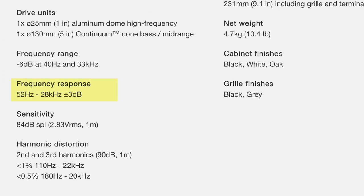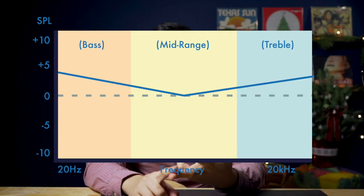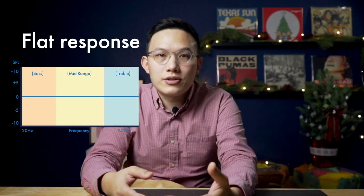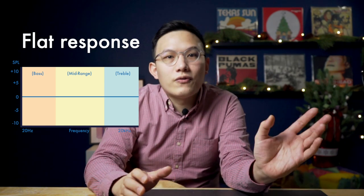Frequency response means how well a speaker can reproduce sound across different frequencies. On a spec sheet, you'll often see something like 52Hz to 28kHz plus or minus 3dB, meaning in that range the speakers can reproduce sound within 3dB of difference — that's the optimal range the brand sees as best. When we look at a frequency response graph, the most common types are flat response, V-curve, or A-curve. A flat response means from the low bass to the high treble, the speakers can output evenly without altering the source sound, which is very hard to achieve and is the pinnacle for audiophiles.